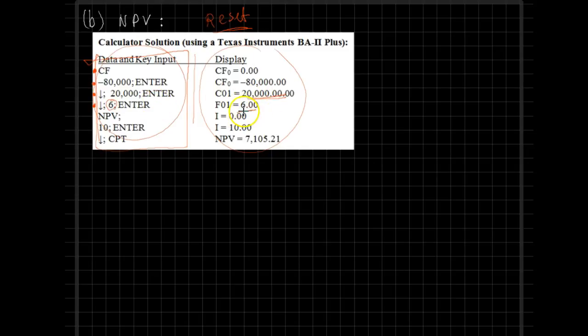Then you press NPV. The I, the letter I, will show up in the screen. The required rate of return of this project is 10 percent. You press enter, you see it on your screen. Make sure to notice the triangle on top of that 10. Finally, you press down and compute, and there you go. Boom, you have your net present value, and this number again is positive.